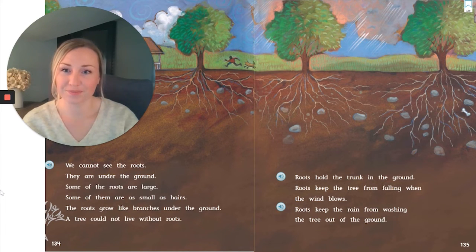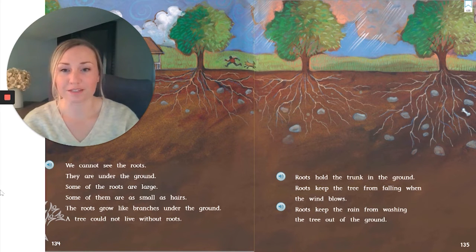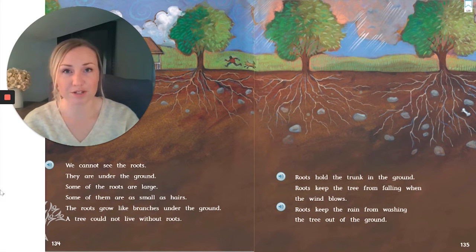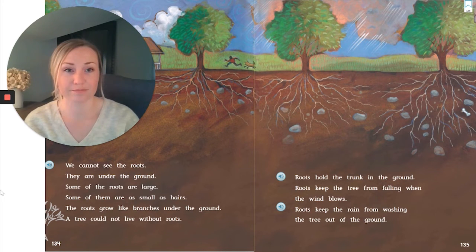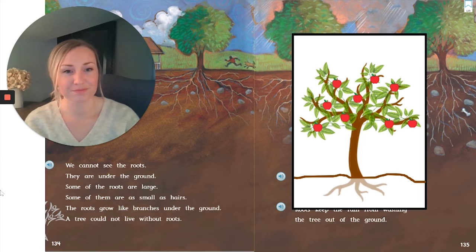We cannot see the roots. They are under the ground. Some of the roots are large. Some of them are as small as hairs. The roots grow like branches under the ground. A tree could not live without roots. Roots hold the trunk in the ground. Roots keep the tree from falling when the wind blows. Roots keep the rain from washing the tree out of the ground. So we just heard a very important part of an apple tree. So here's our apple tree diagram so far. Do you remember what part of the tree is so important on this page? The roots. The story even says a tree could not live without roots. So we need those added.